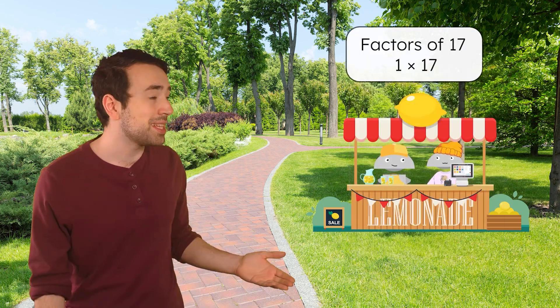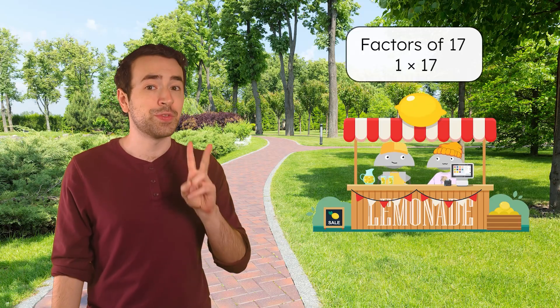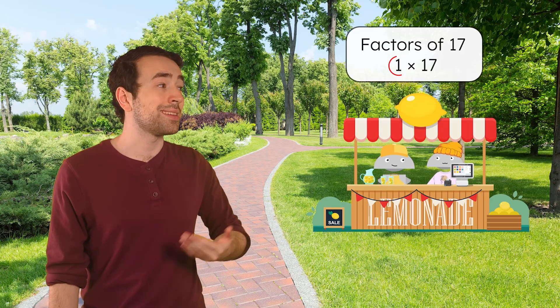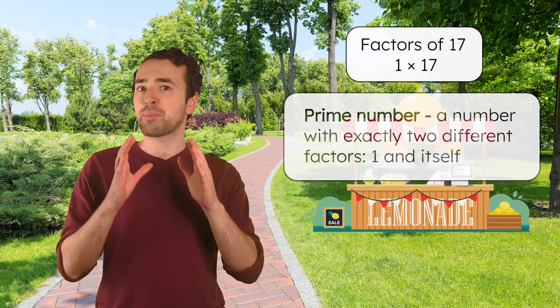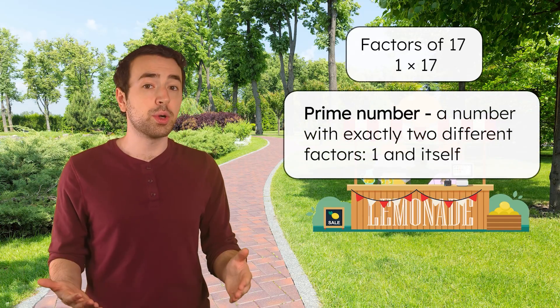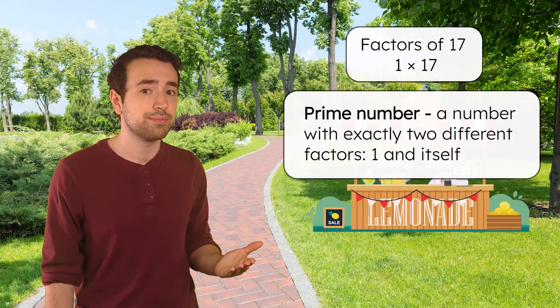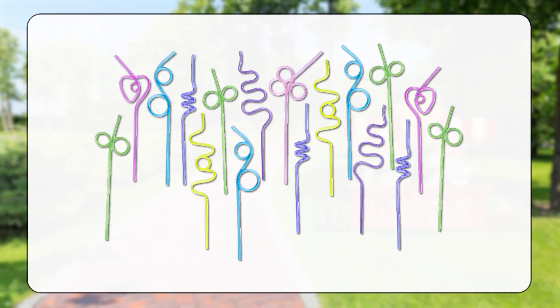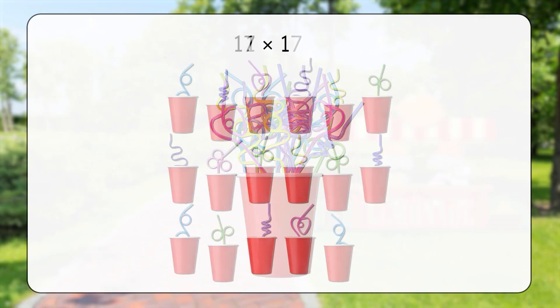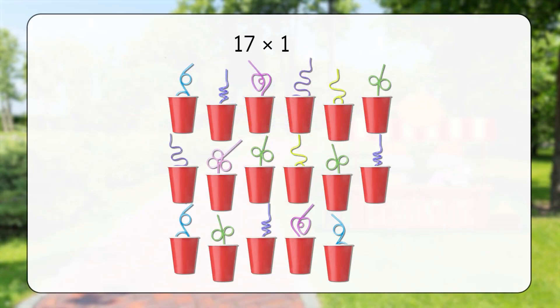It turns out 17 only has two factors, 1 and itself. That means 17 is a prime number, a number with exactly two different factors: 1 and itself. Since we have a prime number of silly straws, we can organize them as 1 group of 17 or 17 groups of 1, but that's it.